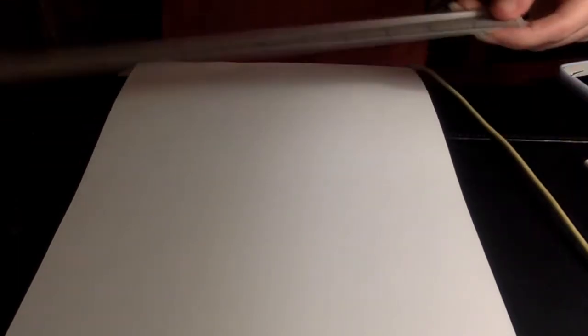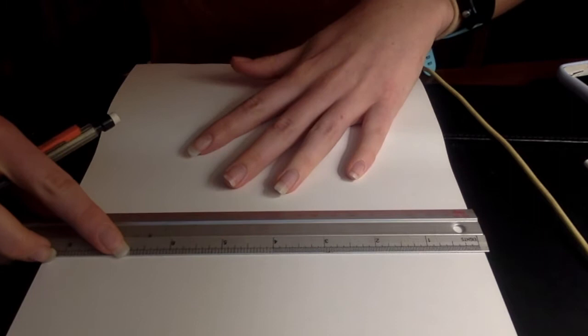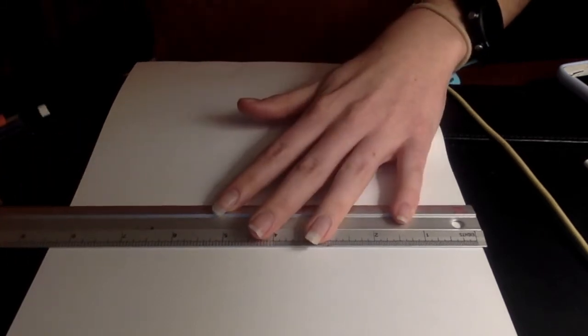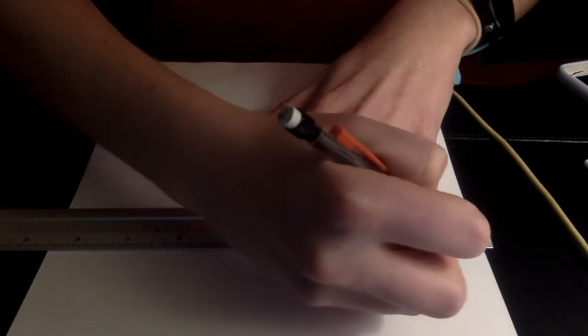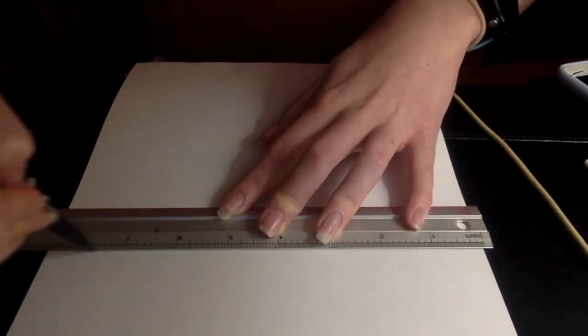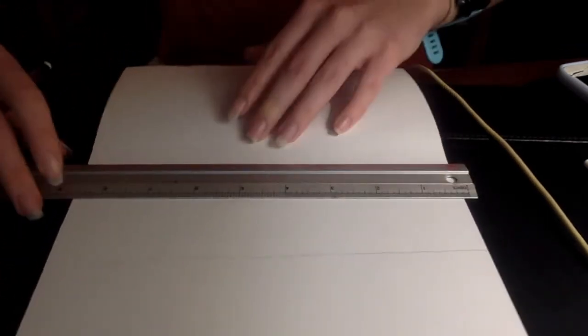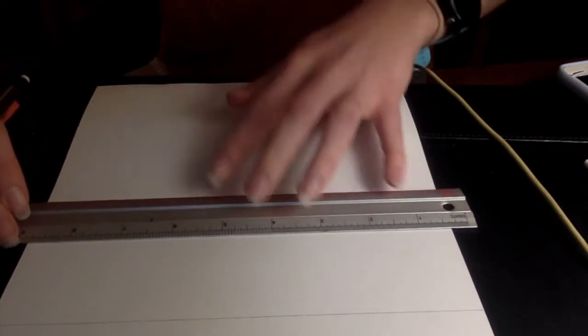Alright, so here I've got my pencil and I've got my ruler, and I'm just going to draw some lines just like this in order to split the page up for different pictures so that we don't use too much paper in this activity.